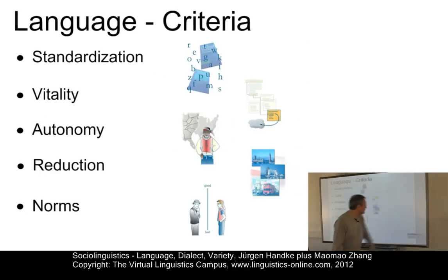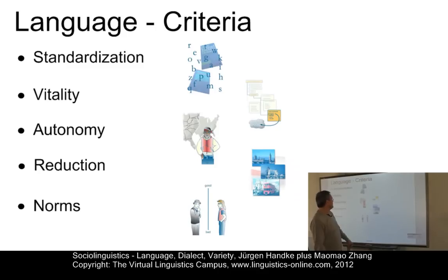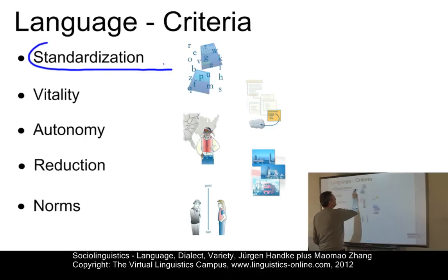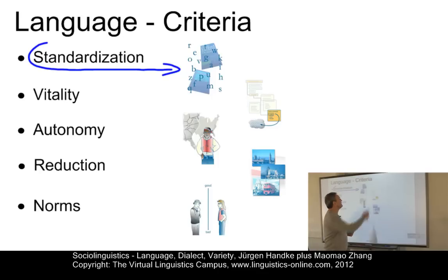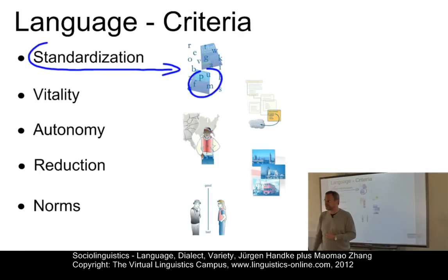What sort of criteria can we use? The first one is standardization. Languages involve a certain degree of standardization — that is, the development of a grammar. Here we have grammar books in present-day English, spelling rules, dictionaries, and in many cases even literature.